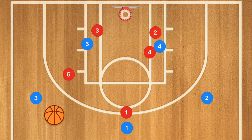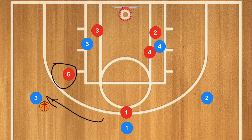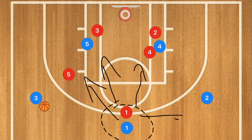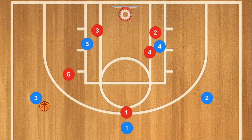This way you can have player one pass to player three because there was a switch on that side. This offense will teach your team not just how to win games and run plays, but it will also help players like the point guard visualize what's happening on the court so he can use players to his advantage.